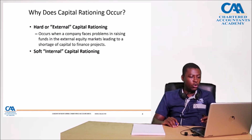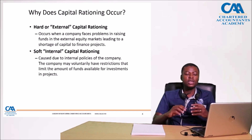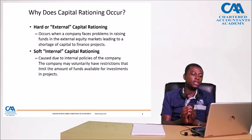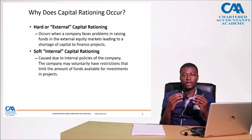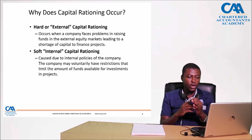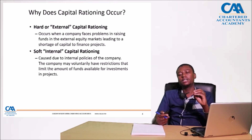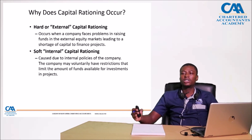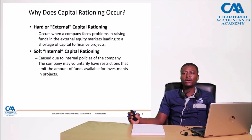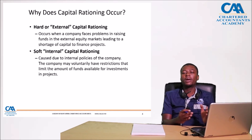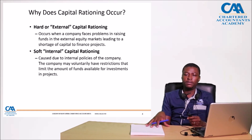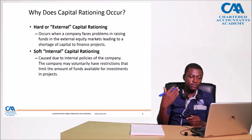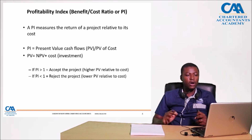Then you also have what we call soft or internal capital rationing. This is largely within the control of the entity — it is the internal policy of the company which governs how we allocate our capital. For example, the company can have volume restrictions on the amount of funds available for investment projects. Say a company has 10 million in a bank account, but part of that 10 million will be required to fund working capital requirements. The company will make a decision to allocate only so much to capital investment projects, and that gives rise to capital rationing issues.